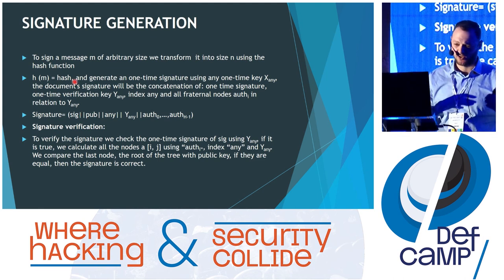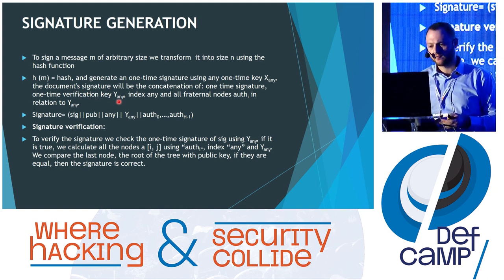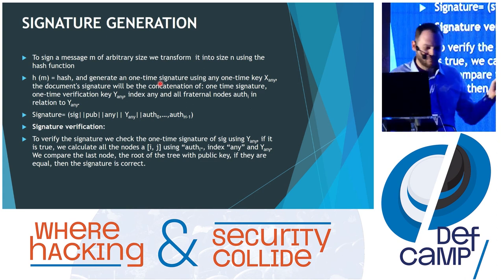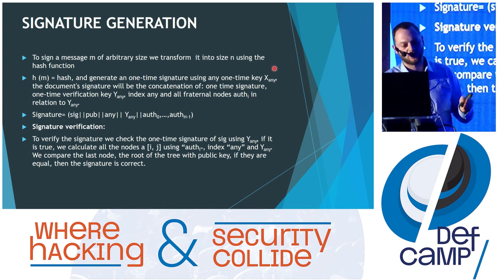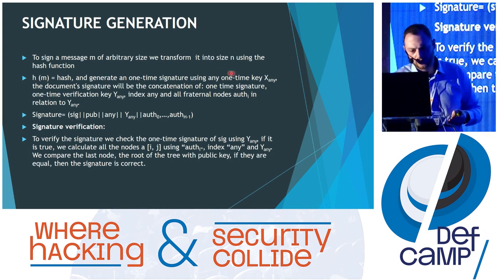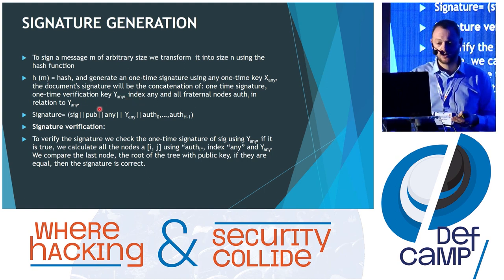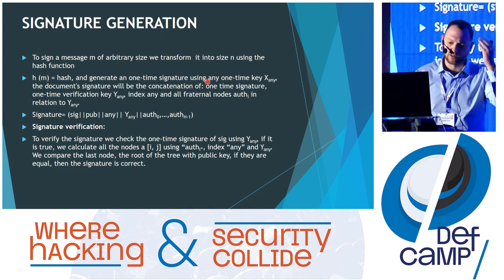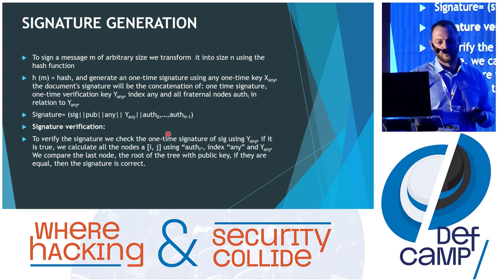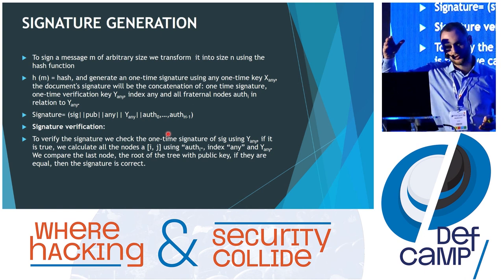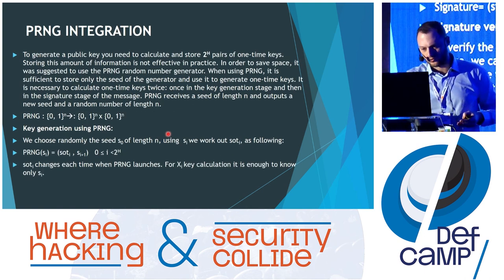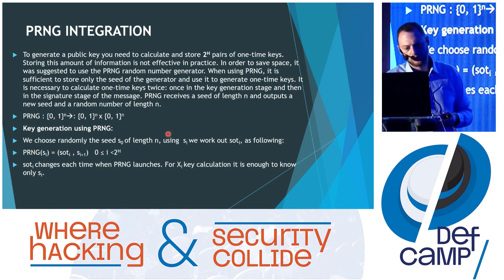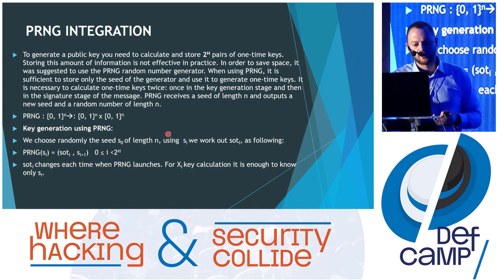How does signature generation work? First we take the message and hash it to get an n-bit message. Afterwards we generate a one-time signature using Lamport or Winternitz. For this we choose any signature key to begin. After that we calculate the verification key, and our signature is a concatenation of this one-time signature, the public key root, the index of the verification key, and all the authentication nodes — all the sibling nodes along the path.